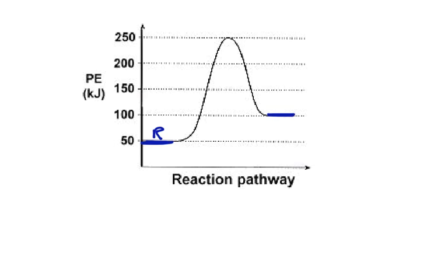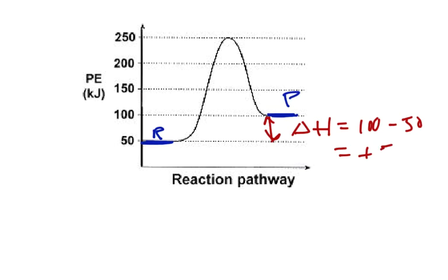The products, wherever it ends up — these products I'll put P, and that would be at 100 kilojoules in this case. Now if we ask for the delta H, the delta H is the difference in energy from the reactants to the products, and it's always measured as the final number minus the initial number. So in this case it's going to be 100 minus 50, so that's going to be a positive 50 kilojoules. So this would be an endothermic reaction, and it's got a positive value for the energy.